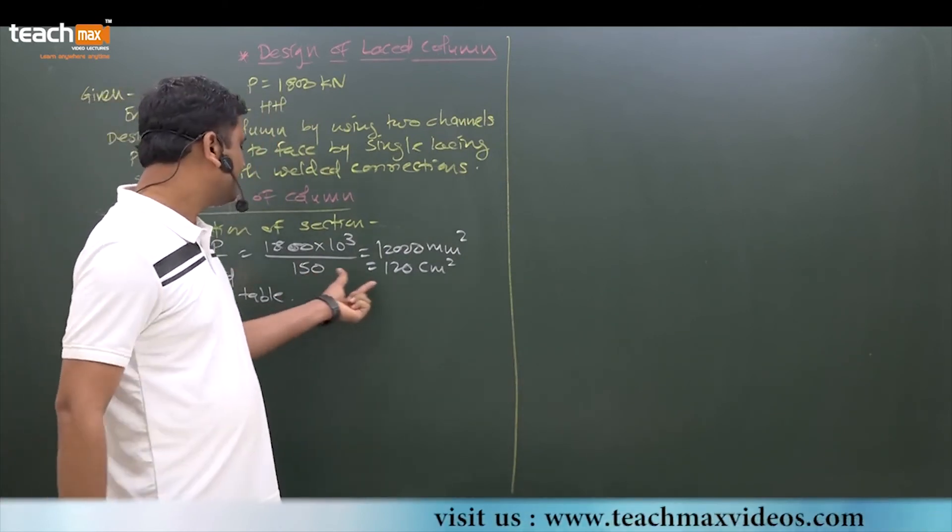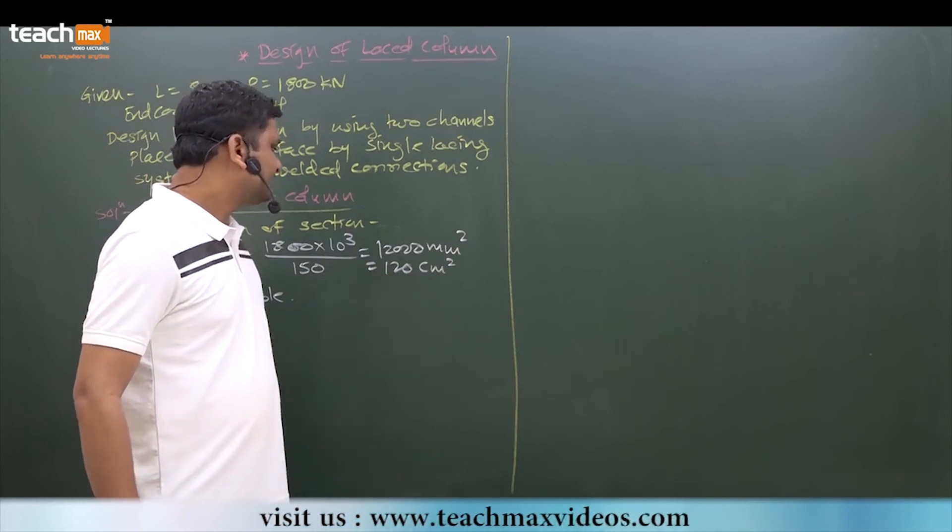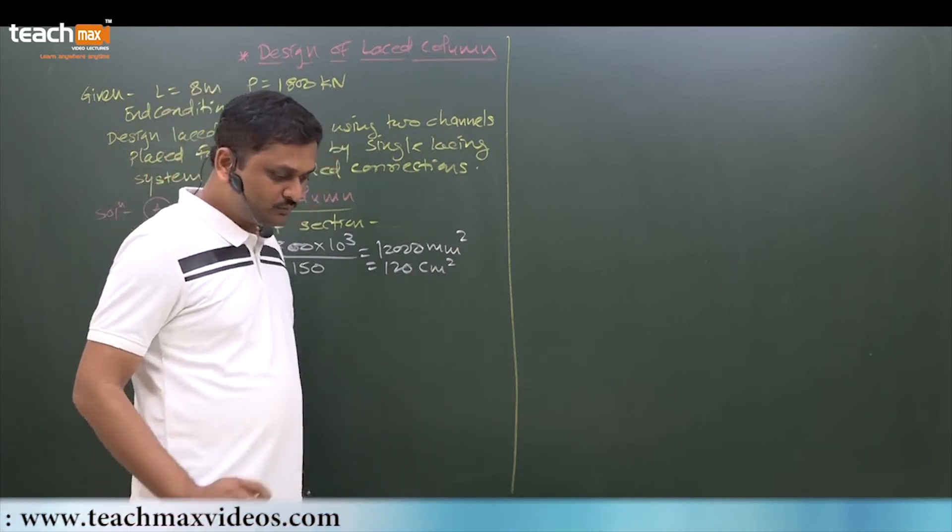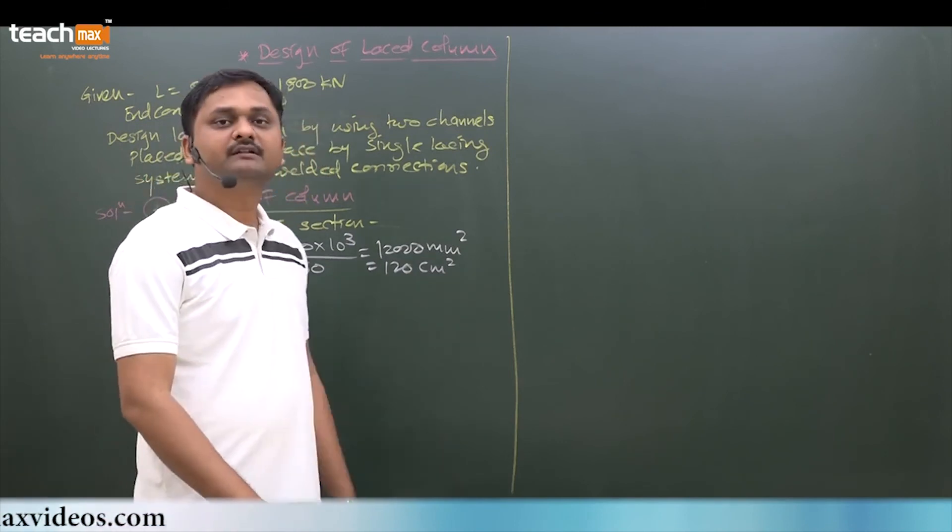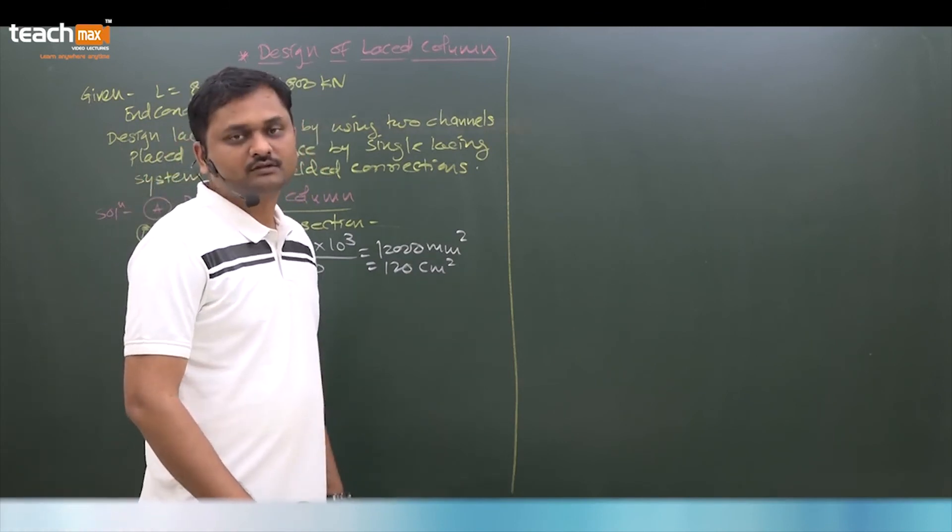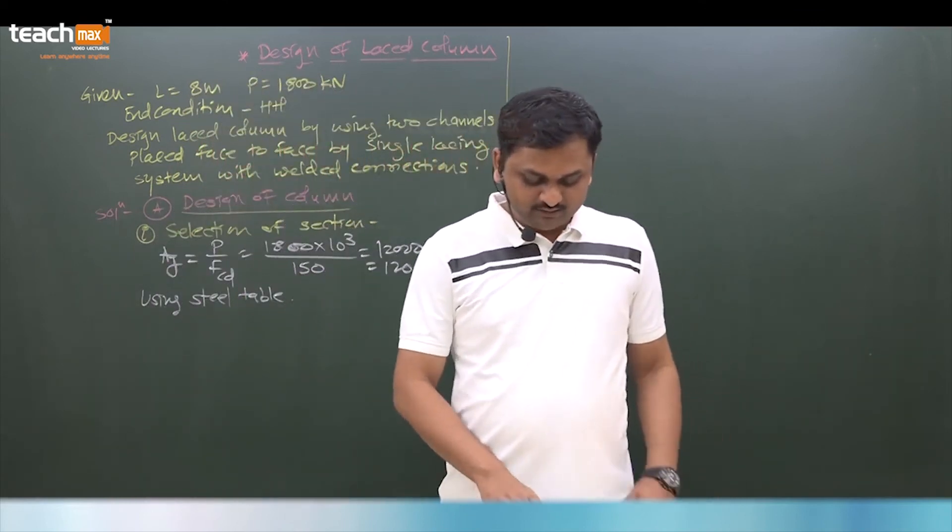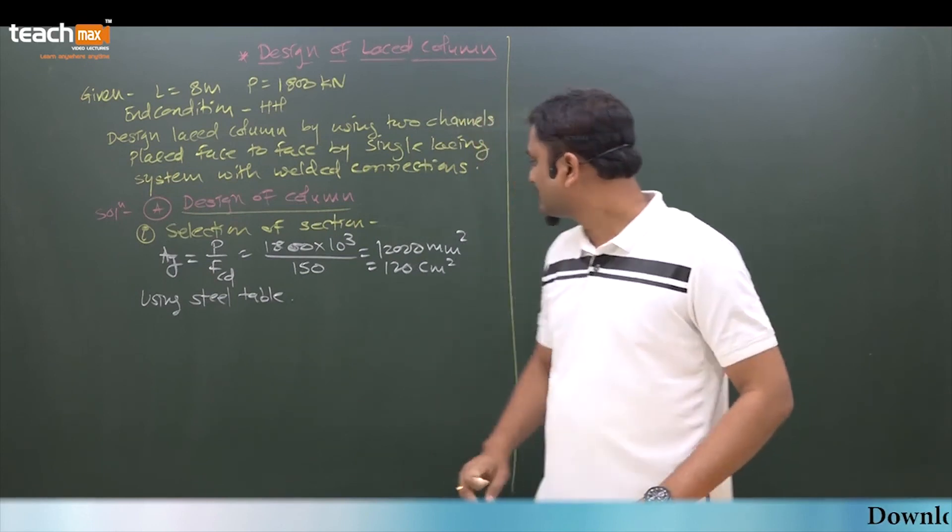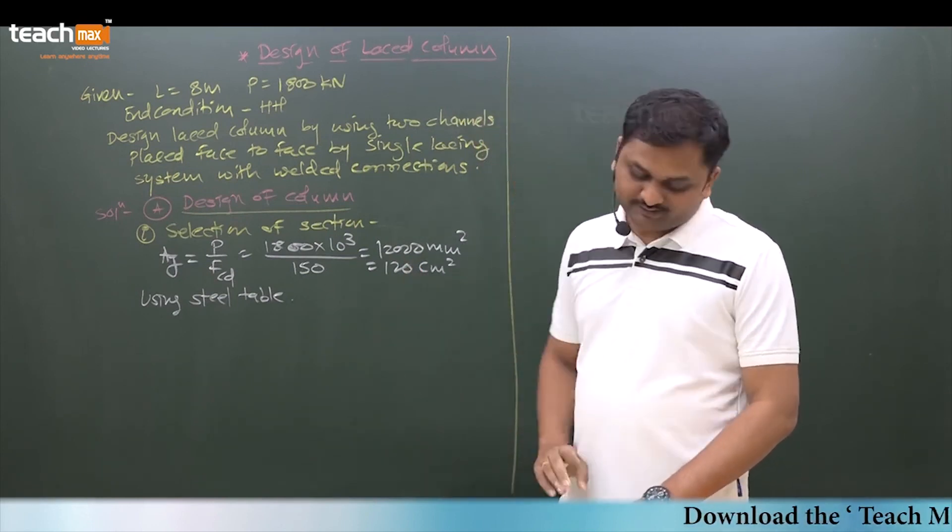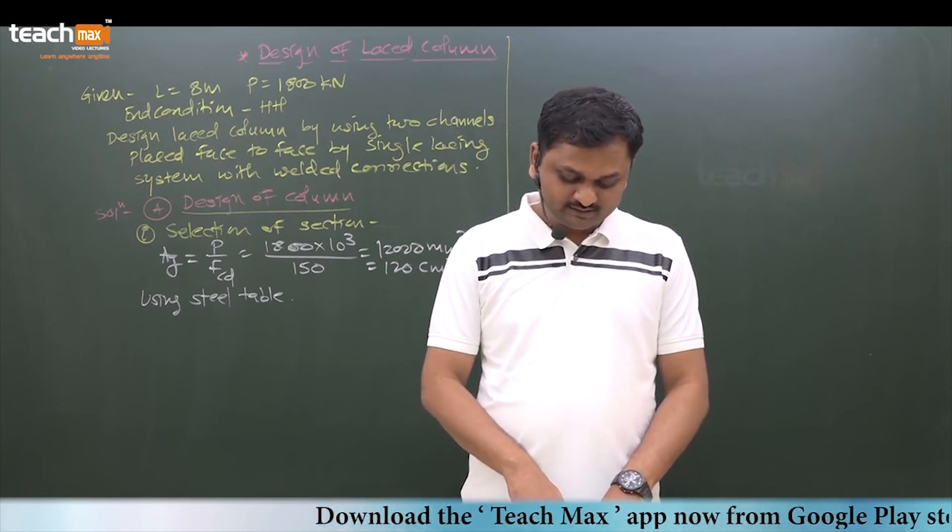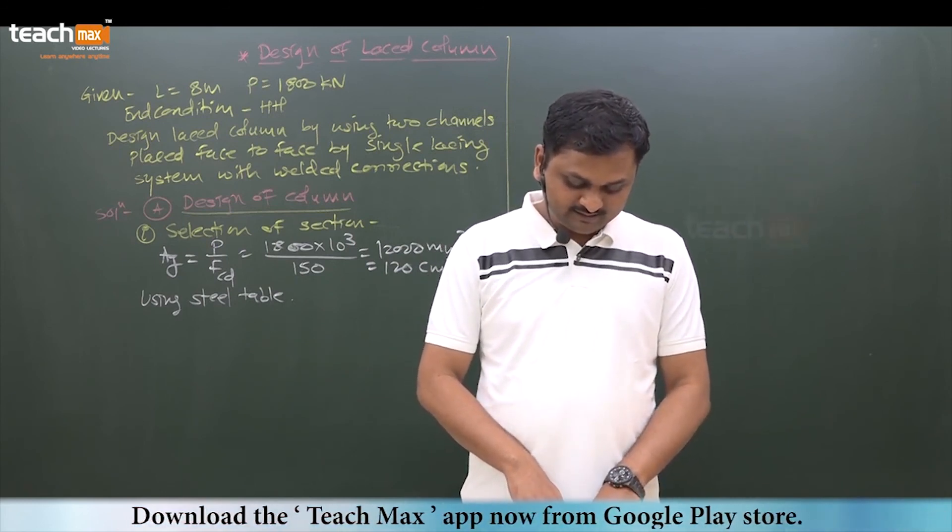So here, now see how to select the section. Required area is 120 cm², so more than half of 120 is 60. So for single channel, the area required is 60 cm². So for 60, more than 60 cm², the section is available, that is I...